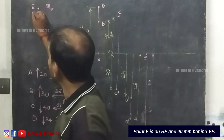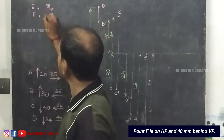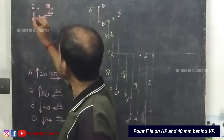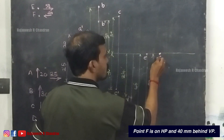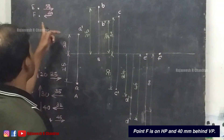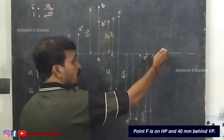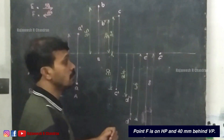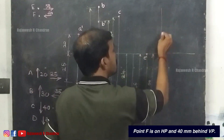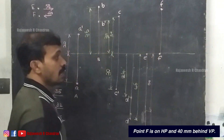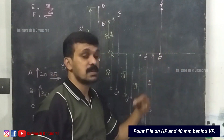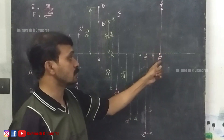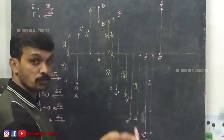The next question: point F is on HP and 40mm behind VP. Since the point is on HP, F dash will be on the XY line. 40mm in front of VP would be below the XY line, so 40mm behind VP means above the XY line, and this distance will be 40. As there is not enough space, I am not marking the dimensions for questions F, G, and H — but you have to mark the dimensions.